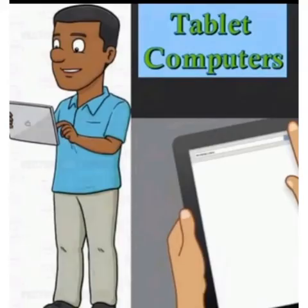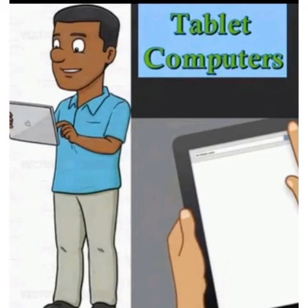Children, next is tablet PC. Tablet PC is a special type of computer. It's very small in size. It is also called a tablet computer. It has a digital camera, microphone, and a touch screen. You can work on a tablet PC by touching the screen with your finger.